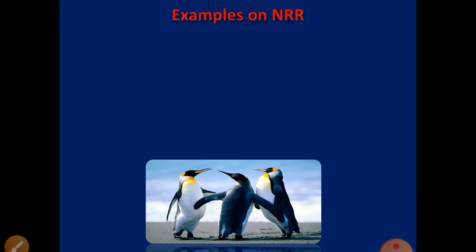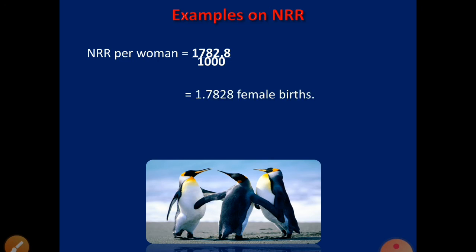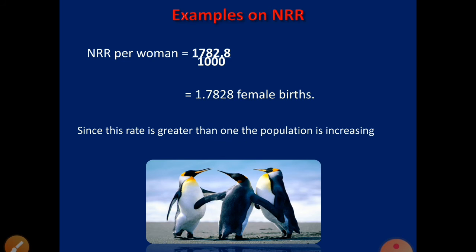NRR per woman is 1782.8 ÷ 1000 = 1.788 female births. Since this rate is greater than 1, the comment is: the population is increasing.